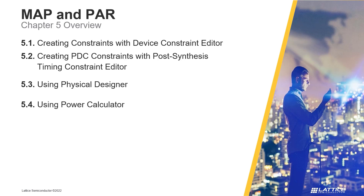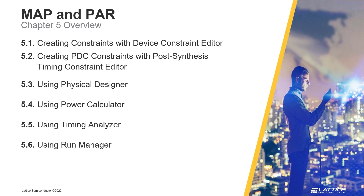In the fourth section, Using Power Calculator, we will discuss Radiant's Power Calculator Tool and how it can be used to calculate the static and dynamic power consumption of a design. In the fifth section, Using Timing Analyzer, we will discuss Radiant's Timing Analyzer Tool and how it can be used to check a design's timing performance after place and route. In section 6, Using Run Manager, the Run Manager Tool will be introduced, as well as how it can be used to run the project flow for multiple implementations in a project.